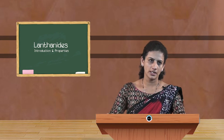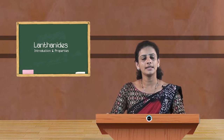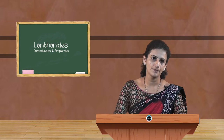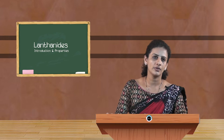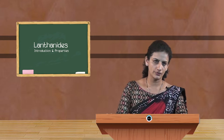Let us see the electronic configuration. Look at this slide — the electronic configurations of lanthanides are given here. There are two ways of writing the electronic configuration of lanthanides: one involving only the outer 4F and 6S orbitals, and one consisting of outer 4F, 5D, and 6S orbitals — except for gadolinium and lutetium, which attain extra stability through half-filled or completely filled electronic configurations.